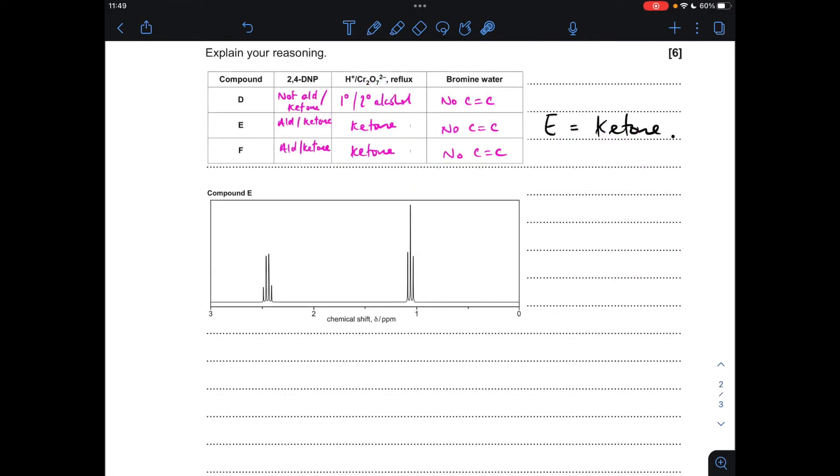So moving on to compound E, remember we've established that it's a ketone. There's its proton NMR spectrum, and it's said in the information that the integration data has been omitted. So we've got two hydrogen environments, that's it. So I'll do my usual thing and just look at each signal and build up a picture of the molecule from that.